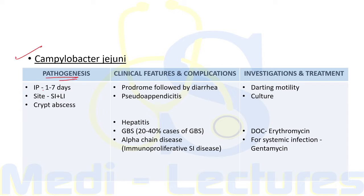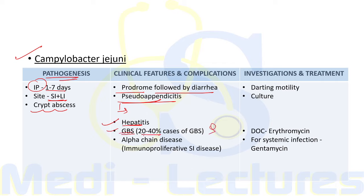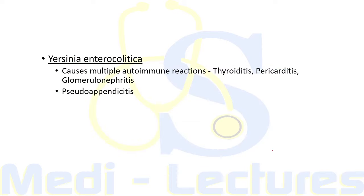Campylobacter jejuni has an incubation period of one to seven days, involves both small and large intestine, and forms crypt abscesses. Presentation involves a prodrome followed by diarrhea. It also causes pseudo-appendicitis with pain in the right iliac fossa. It can lead to hepatitis and GBS — notably, 20–40 percent of GBS cases are precipitated by Campylobacter jejuni infection. It is also responsible for alpha-chain disease, an immunoproliferative small intestine disease. The organism has darting motility; drug of choice is erythromycin, and gentamicin for systemic infection.